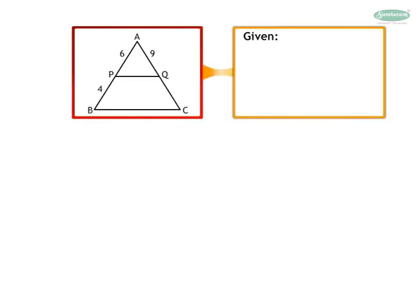2. It is given that in triangle ABC, segment PQ is parallel to side BC. AP is equal to 6, PB is equal to 4, AQ is equal to 9.